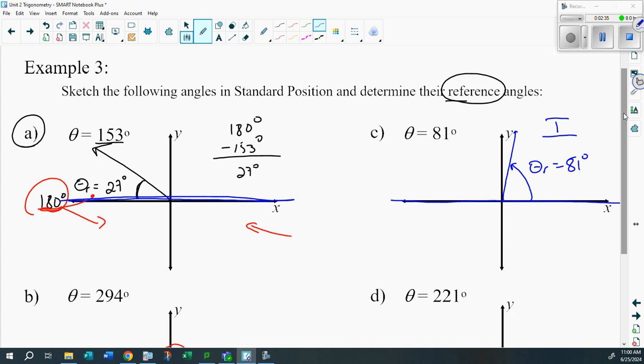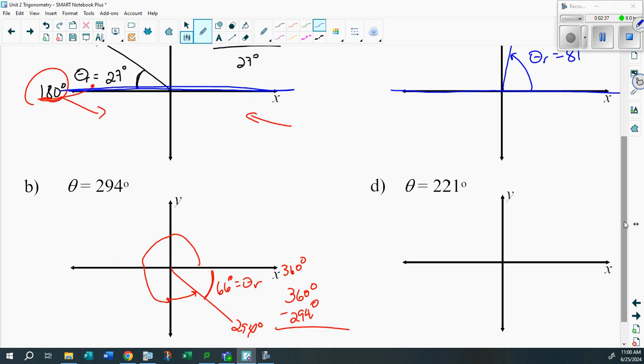Last one. 221 degrees. Where's 221? There's 90, there's 180, 221 is probably somewhere out here, somewhere around there. So you're dealing with 180 degrees now. 221 minus the 180 degrees works out to be 41 degrees.